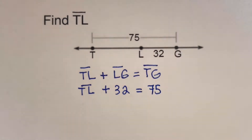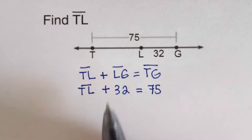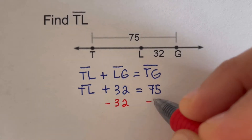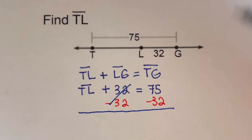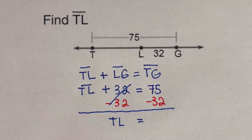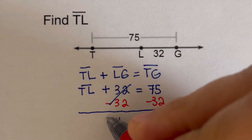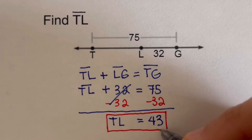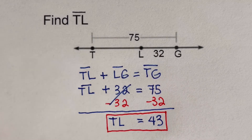We solve for TL by subtracting 32 from both sides: minus 32 on each side. TL equals 75 minus 32. This is the length from point T all the way to point L. That makes sense because 43 plus 32 is 75.